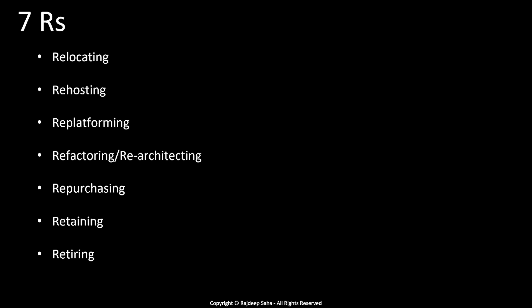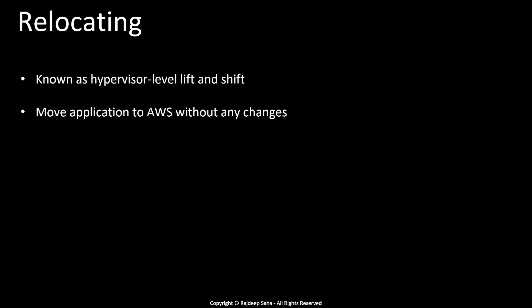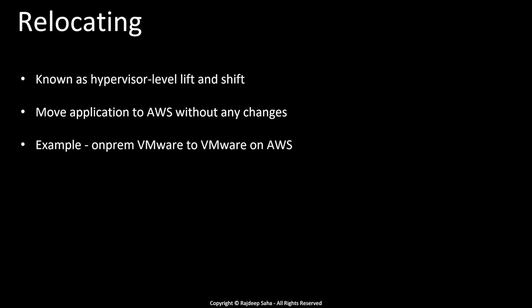The first strategy is relocating, also known as hypervisor-level lift and shift. You move the infrastructure to the cloud without purchasing new hardware, rewriting applications, or modifying your existing operations. For example, if you are running your on-premises software on VMware and it is supported in VMware Cloud on AWS, you can just relocate them. In this case, you don't need to change anything — you don't even have to understand bare-bone AWS services like EC2. You just move it and run it.